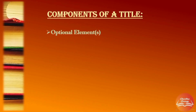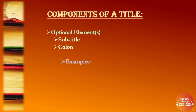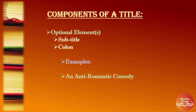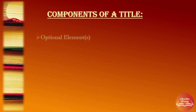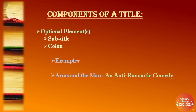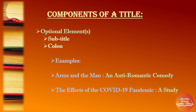Now let's check out the optional elements in a title. Firstly, the subtitle. Very often we see subtitles, and whenever you use subtitles, you must also make use of the right punctuation — that is, a colon. Remember Arms and the Man? Its subtitle is An Anti-Romantic Comedy. And for the write-up on the pandemic, let's say we put the subtitle as A Study. So this is how you write the whole title: Arms and the Man: An Anti-Romantic Comedy. The second one: The Effects of the COVID-19 Pandemic: A Study.